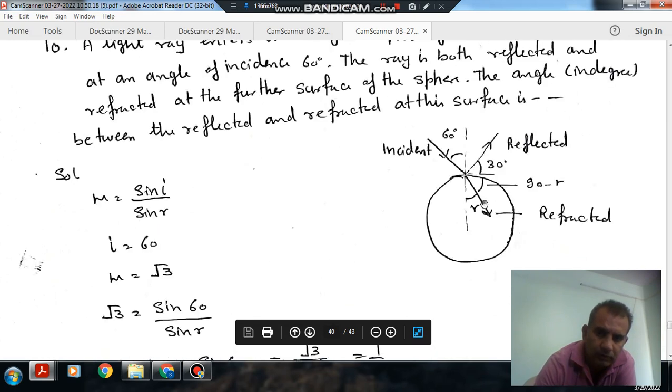So gamma equals 30 degrees. This angle and this angle are the same, so this angle is 30. So the total angle is here 90 degrees between the refracted and reflected rays.